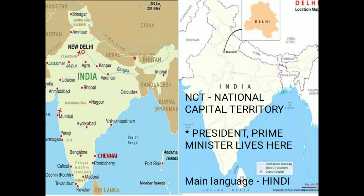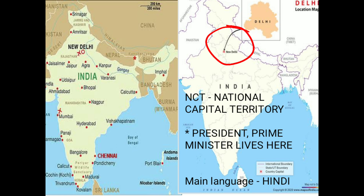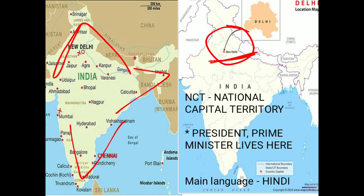Now let's come to the first city we are going to discuss, that is New Delhi. India has many large cities. Let's look at only four of the oldest and largest cities: Delhi, Mumbai, Kolkata, and Chennai. First we will look at Delhi. If you see where Delhi is located on the political map, Delhi is basically located in the northern portion of India.